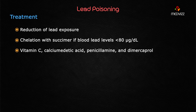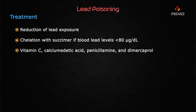Treatment involves reduction of lead exposure, which is the primary approach. If the blood lead concentration is too high — approximately 80 micrograms per deciliter — chelation with succimer (2,3-dimercaptosuccinic acid, DMSA) is indicated. Other pharmacological treatments include vitamin C, calcium, penicillamine, and dimercaprol, mainly to decrease the hemolytic crisis in the patient. This is the typical classic case of lead poisoning.